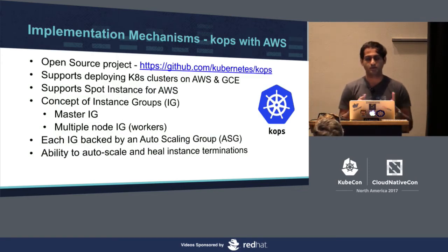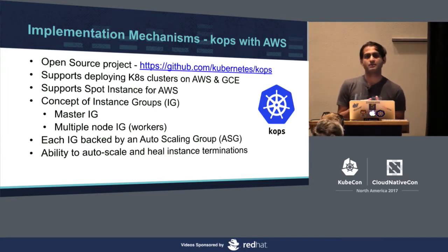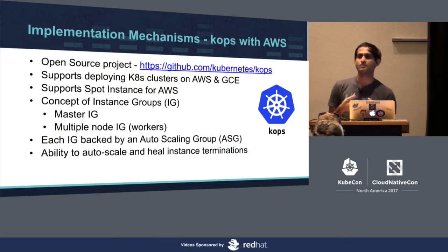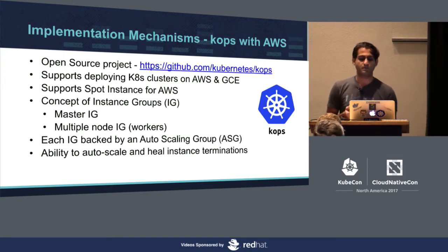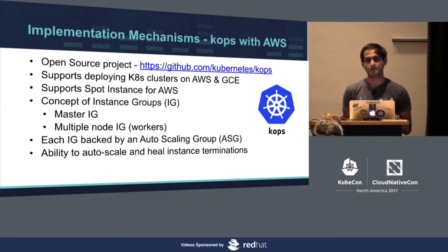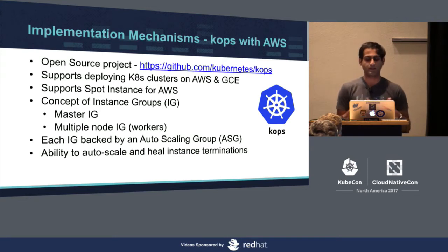With KOPS, which has various backends and supports multiple cloud providers, the instance group is the core binding — an instance group consists of instances of the same type and can be spot, preemptible, or fixed. When you create a cluster with KOPS, it creates multiple instance groups: one for the master components and one for the nodes or workers. These are backed by auto scaling groups, so if a node gets terminated within an instance group, it gets recreated.